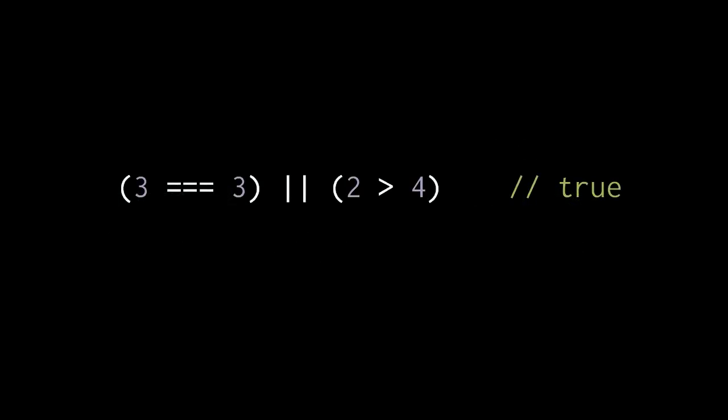This expression tests whether three is equal to three, or two is greater than four. And, of course, three is equal to three. So, even though two is not greater than four, the or operation returns true because one of its operands is true. Note that the parentheses here could have been left out because the equals operator and the greater than operator both have higher precedence than the or operator, and so would have been done first anyway. For stylistic reasons, though, it's often good to use superfluous parentheses to make the order of operations absolutely clear.